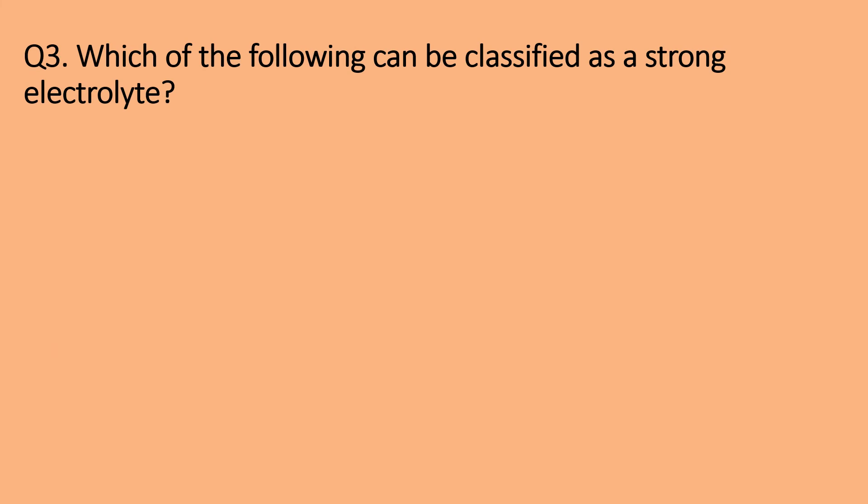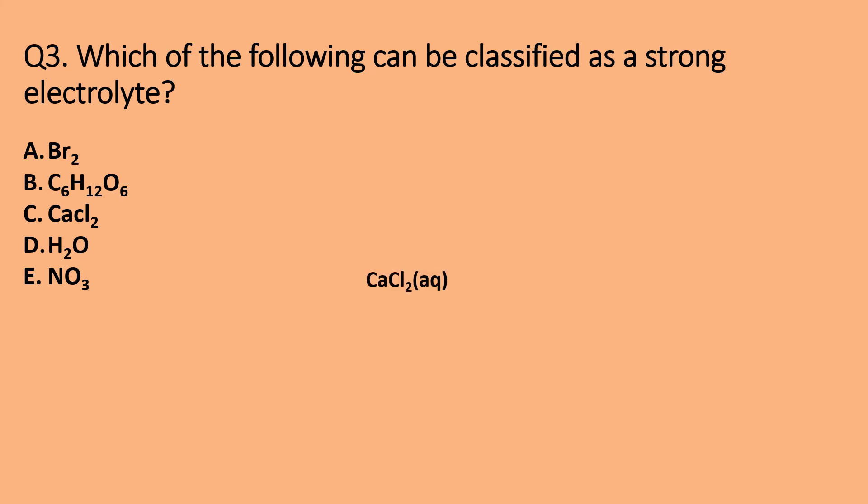Question 3: Which of the following can be classified as a strong electrolyte? The options are: A. Bromine, B. Glucose, C. Calcium Chloride, D. Water. Any substance that dissociates to form ions can be termed an electrolyte. Calcium chloride in an aqueous solution dissociates to give 1 calcium ion and 2 chloride ions — a total of 3 ions. Hence, it can be classified as a strong electrolyte. Calcium chloride is the only compound among the options that completely dissociates.